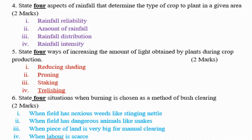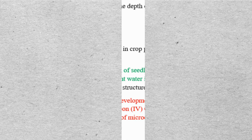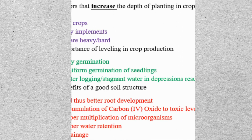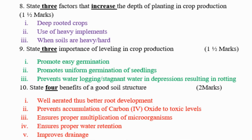Question number 8: State three factors that increase the depth of planting in crops. Number 1: deep-rooted crops. Number 2: use of heavy implements. Next: when soil is heavy or hard.